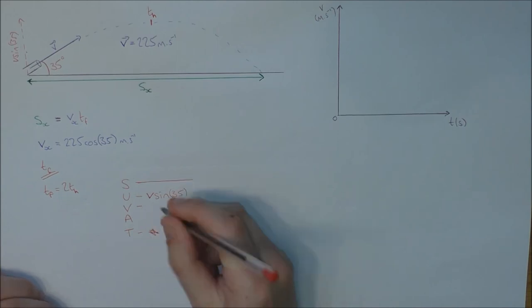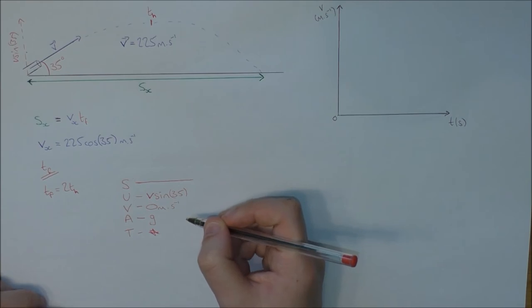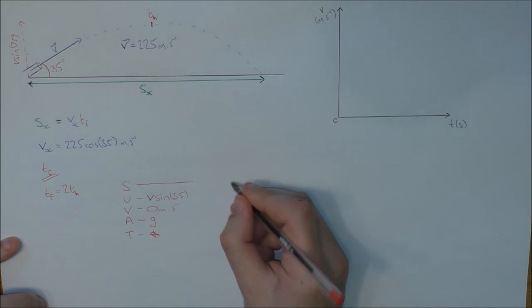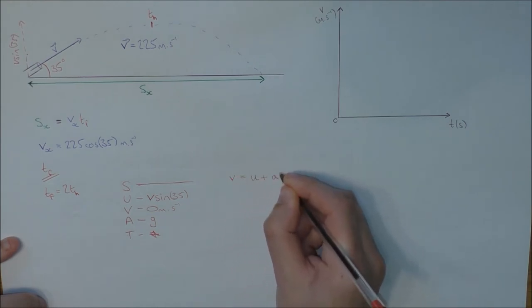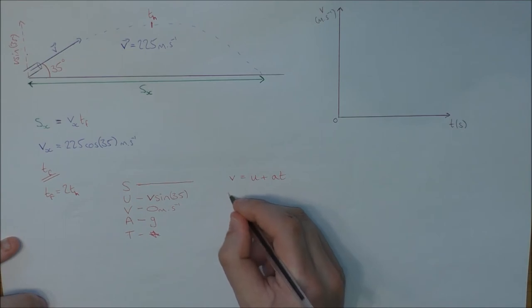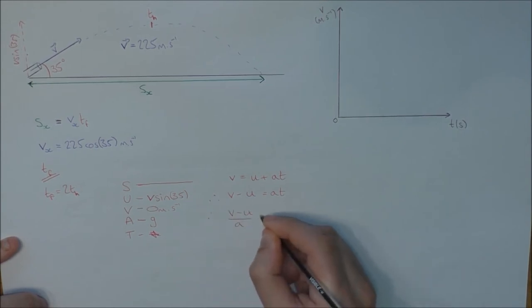I know the convenient value of V which equals zero meters per second, and I always know A because I always have A. Even though I'm not given it, it's little g. So I'm going to use my SUVAT equation. What I'm going to use is V equals U plus A T. I'm going to rearrange that for time.